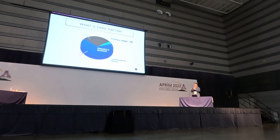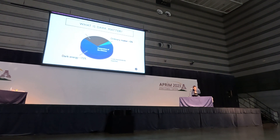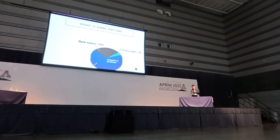So what is dark matter? From our undergrad or grad school astronomy or cosmology classes, we may know that our universe consists of three types of things. The first one is ordinary matter, which is about 5%. The next one is dark energy, which is about 72%. And the final one is dark matter, which is about 23%, and this is the thing I want to talk about today.